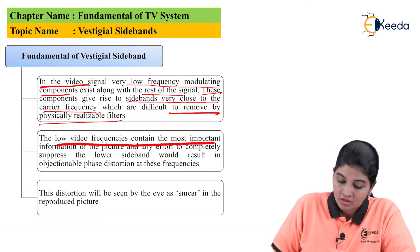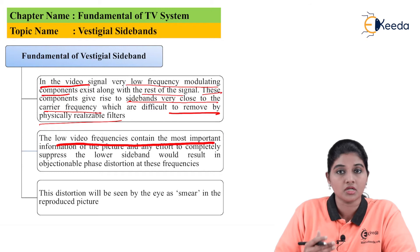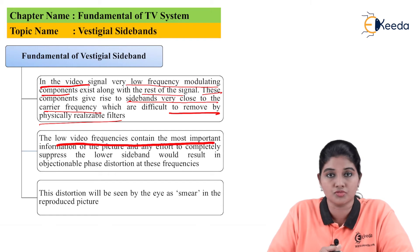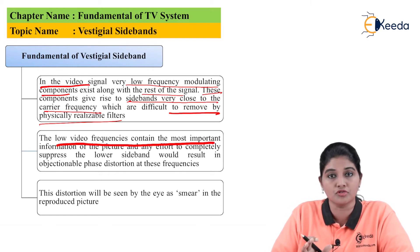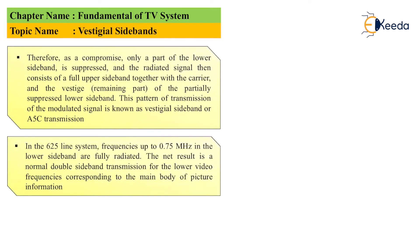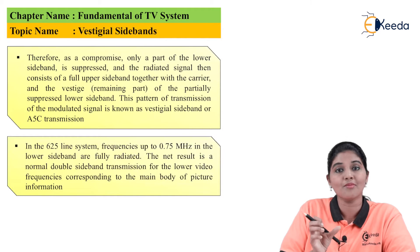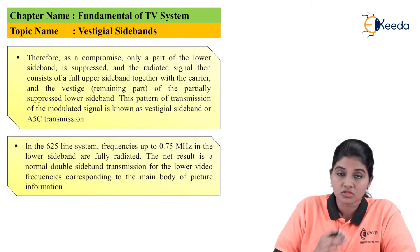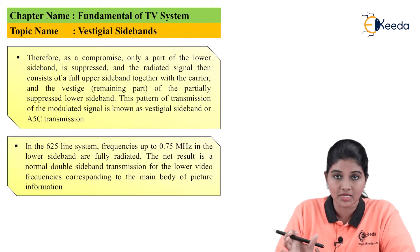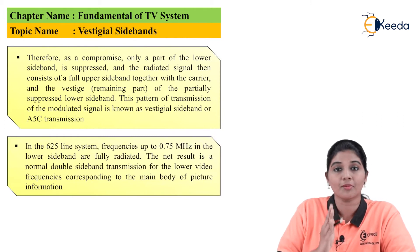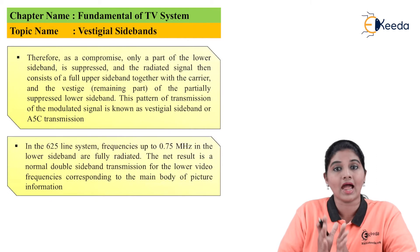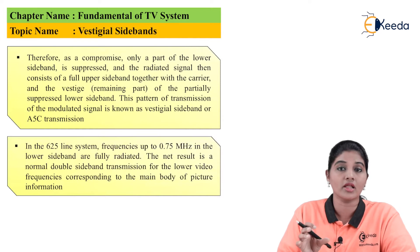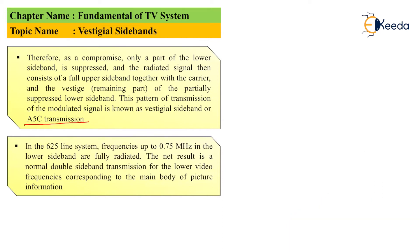If the low frequency component in the TV transmission system is removed, it causes distortion in the output or distortion in the reproduced picture, which can be seen as damage in the reproduced picture. So as a compromise, only a small portion of the lower sideband is suppressed and the remaining portion is added with the full upper sideband. The transmitted signal now consists of the full upper sideband along with the remaining unsuppressed portion of the lower sideband plus the carrier signal. This pattern is called vestigial sideband transmission, also known as A5C transmission.